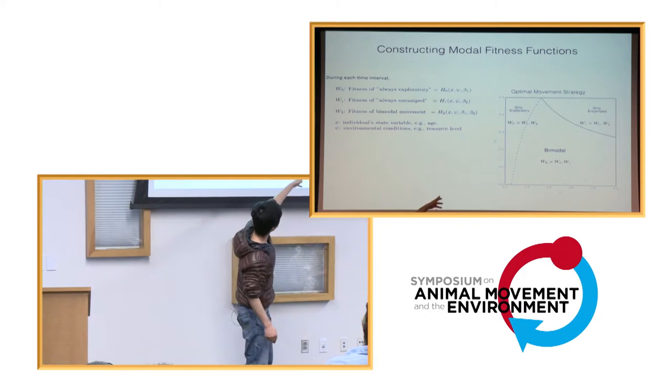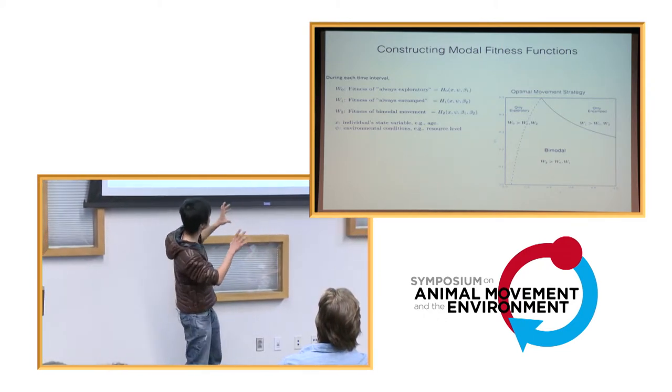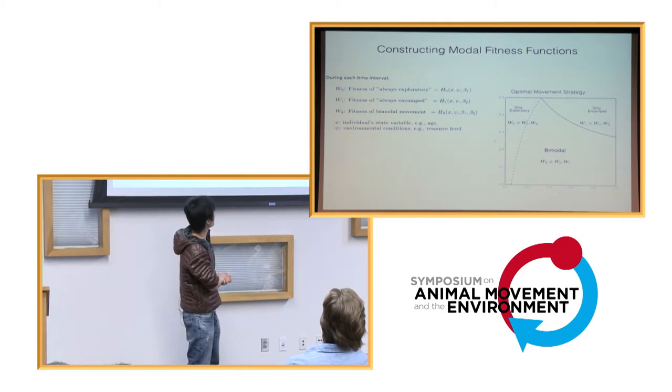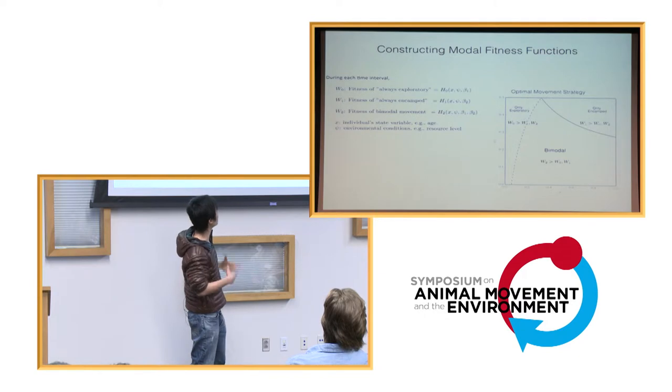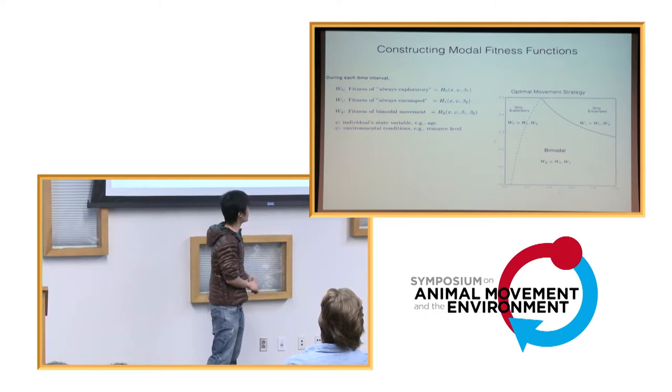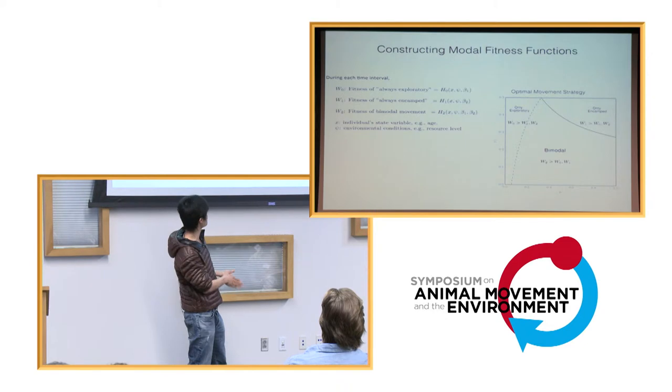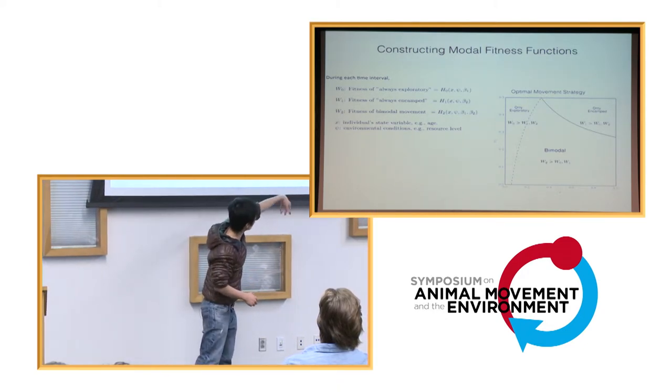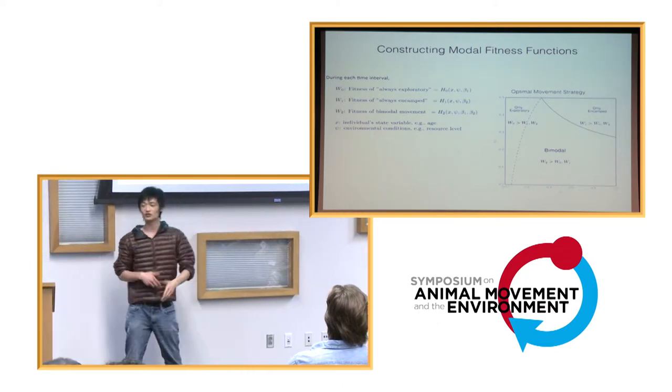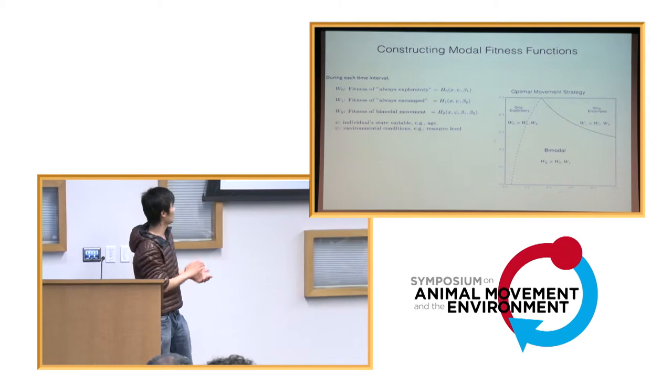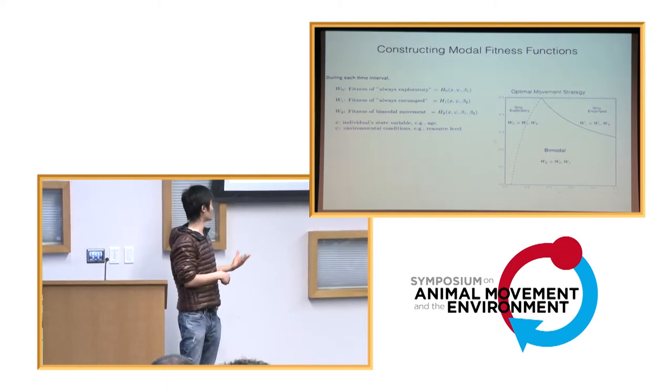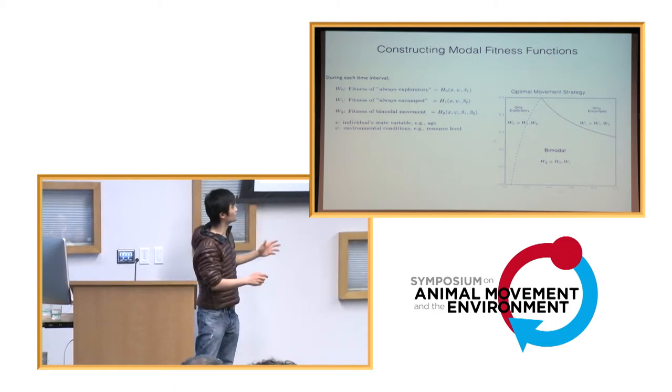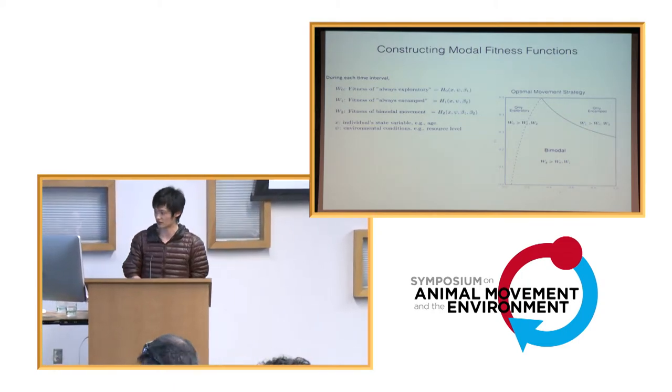So, the left side of that tent shape interior is basically a parameter space where the only exploratory strategy is the optimal thing for the individual to do. And likewise, on the right-hand side, the individual is better off to always be encamped no matter what. And in the tent interior, that's where there's more movement diversity stemming from movement by modality. And there's also a vertical gradient, so it's not just all the same, but again, in the interest of time, I'm not going to show that.